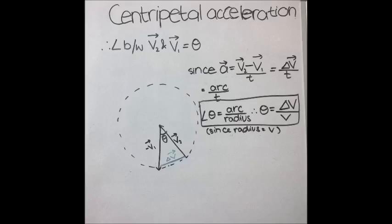Now, theta is defined as arc upon radius. In this circle, the arc is equal to delta V and the radius is equal to the velocity. Hence, theta is equal to delta V upon V.